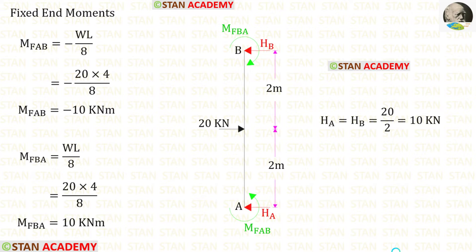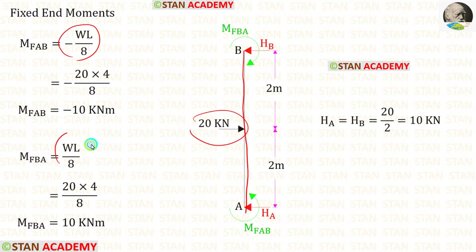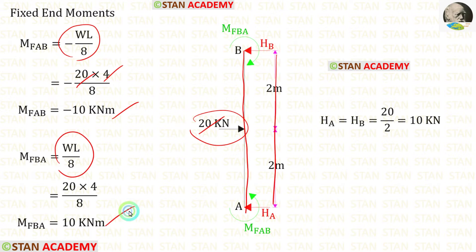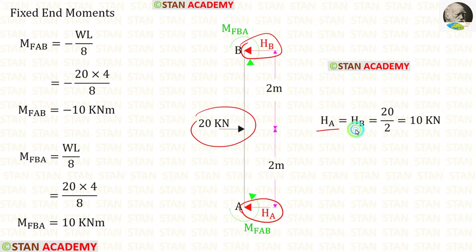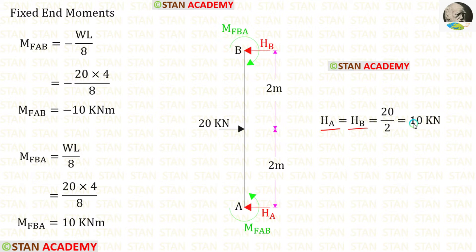Now let us find the fixed end moments and reactions. First, let us find them in column AB. In column AB, we have a point load of 20 kilo Newton acting at the center. The formula to find the fixed end moments are −WL/8 and +WL/8. Here W is 20 and L is 4. After calculation, for MFAB we get −10 and for MFBA we get 10. For horizontal reactions HA and HB, since the loading is symmetrical with the point load at center, we divide 20 by 2, giving HA and HB each as 10 kilo Newton.